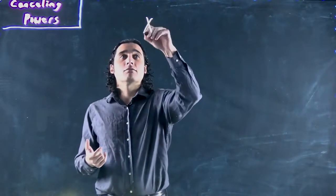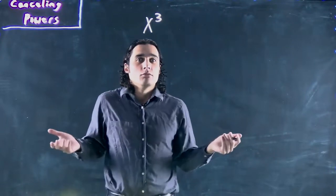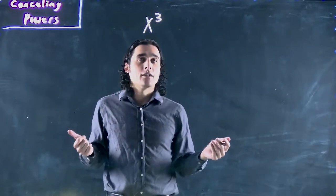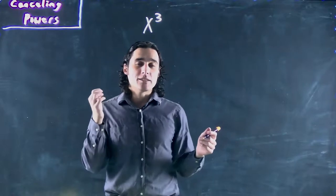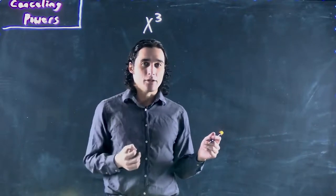But for now, once you have that step, let's say you have x cubed. What do you do? How do you get x? Well, to get rid of a power, you always multiply by the inverse.